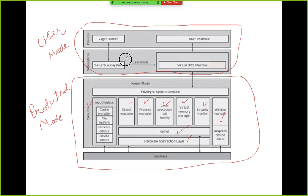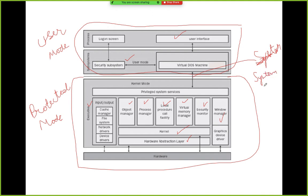In user mode, you have virtual machine, security system, and user interface through which you start programs. But basically, most resources are under the control of the kernel, and communication between user mode and kernel mode takes place through system calls. Since most resources are under the control of the kernel, when any resource is needed from kernel mode, a system call originates from user mode, which establishes the link between kernel mode and user mode, and through this system call, resources are allocated to the user depending upon the authorization.